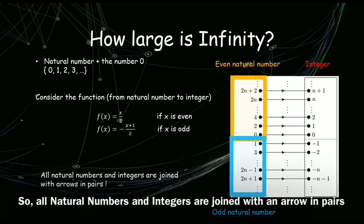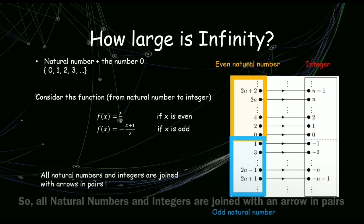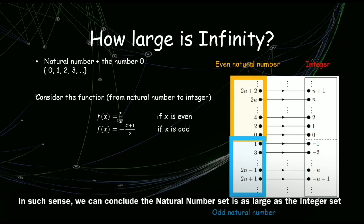So, all natural numbers and integers are joined with an arrow in pairs. In such sense, we can conclude, the natural number set is as large as the integer set.